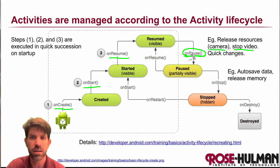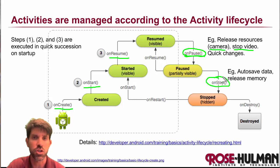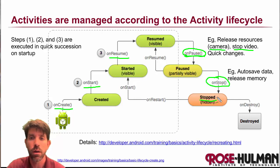What if the activity was made totally obscured — another activity came to the foreground and ours was hidden entirely? Then there's onStop. Maybe we had some data we need to store, because if our activity has been stopped, eventually the system is going to reclaim the information and kill it. So we want to use these callbacks to handle that.